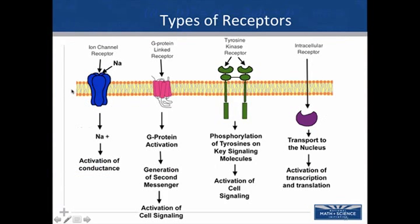Looking at two kinds of receptors drawn in additional detail: one diagram shows an ion channel receptor that allows sodium in, and another shows a G-linked receptor with more molecular detail leading to cell signaling. Tyrosine kinase receptors usually come in tandem and are associated with phosphorylation. There's also the intracellular receptor, as seen in the testosterone example. These are drawn in a different format but are very similar in function to those previously covered.